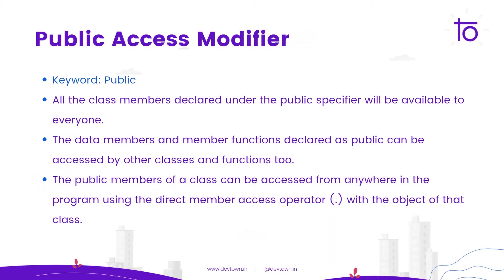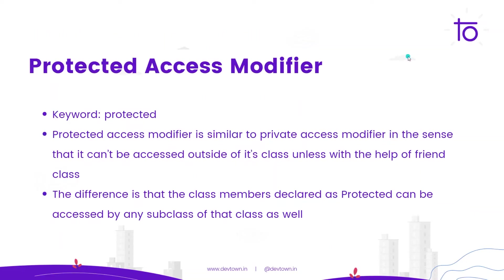All the class members declared under the public specifier will be available to everyone. The data members and member functions declared as public can be accessed by other classes and other functions too. The public members of a class can be accessed from anywhere in the program by using the dot operator with the object of that class.